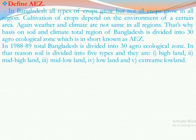In 1988 to 1989, Bangladesh was divided into 30 Agroecological Zones. On the basis of that, land is also divided into five types: highland, mid-highland, mid-lowland, lowland, and extreme lowland. So that is the division of area and land known as AEZ, Agroecological Zone.